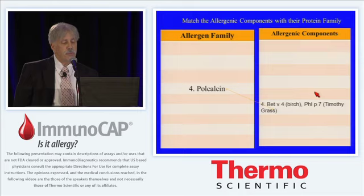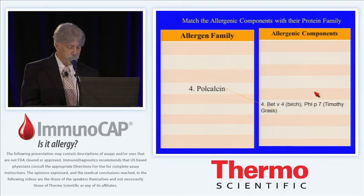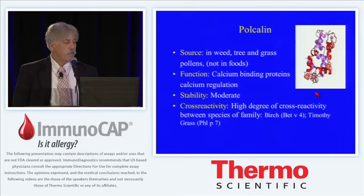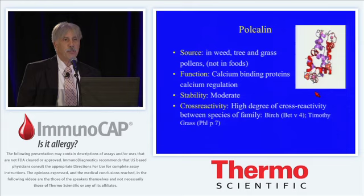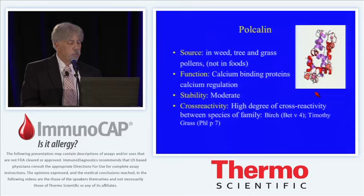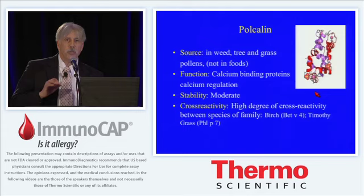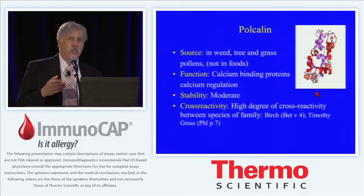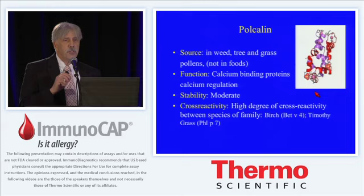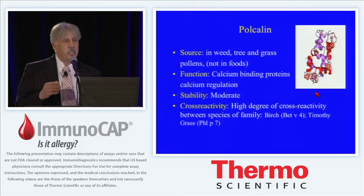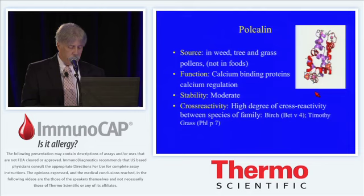Next are the polcalcins, and the illustrative ones are BETV4 and PHLP7. They are found in weeds, trees, and grasses, and not in foods. They're calcium-binding proteins that regulate calcium function. They are moderately stable, and there's a high degree of cross-reactivity among this family. I've selected BETV4 and PHLP7 in particular because when we talk about components relevant to pollen allergy assessment, the profilins and the polcalcins are the cross-reactive components that will allow you to identify cross-reactivity in multi-sensitized pollen-related individuals.